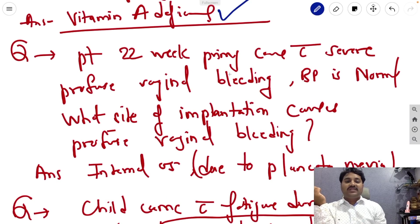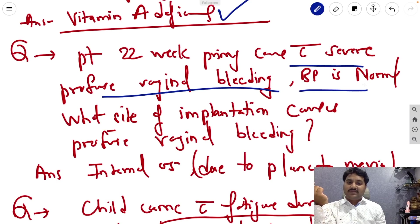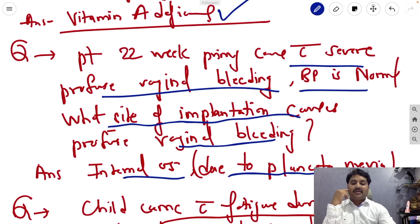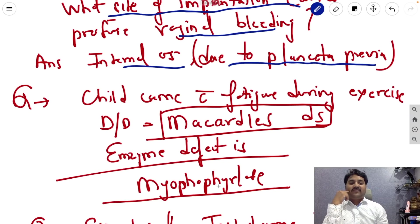Now the patient is 22 weeks primigravida, came with severe profuse vaginal bleeding but BP is normal. Which site of implantation caused the profuse vaginal bleeding? So the answer is internal os, which is due to placenta previa. Now question, the child came with fatigue during the exercise. Differential diagnosis is McArdle's disease. The enzyme defect is myophosphorylase.